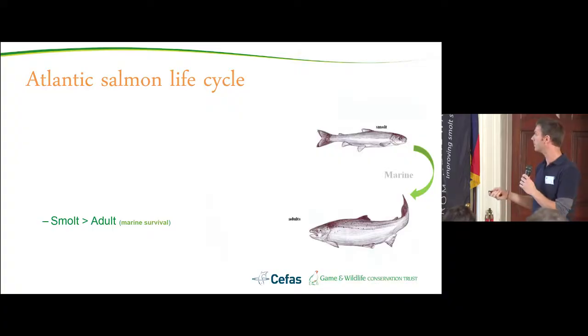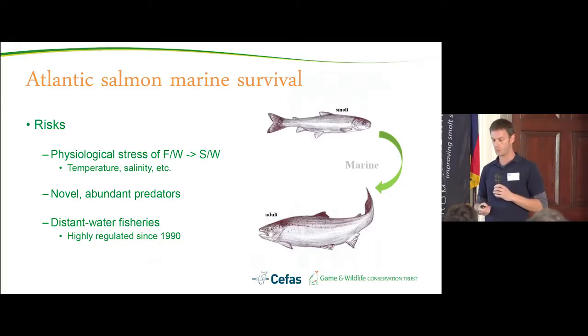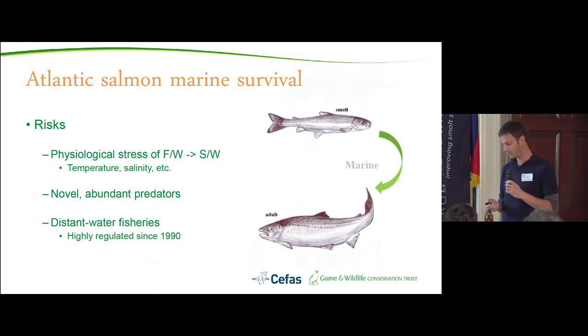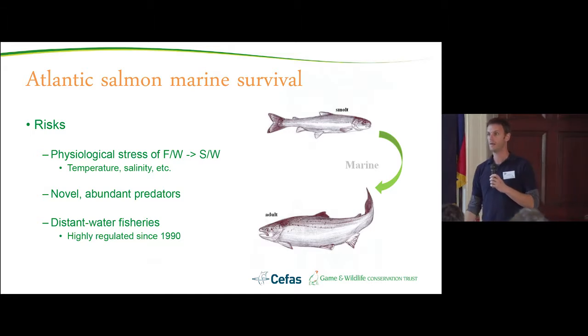I've done a lot of digging in the literature for information on what affects smolt survival in the marine environment and haven't found a huge amount. I've come up with some of the same risks as Andy did: physiological stress of moving from freshwater to saltwater, temperature and salinity effects, novel and abundant predators that smolts won't be used to — they're just of a good size for many bird and fish predators — and of course distant-water fisheries, though that is now fairly highly regulated.